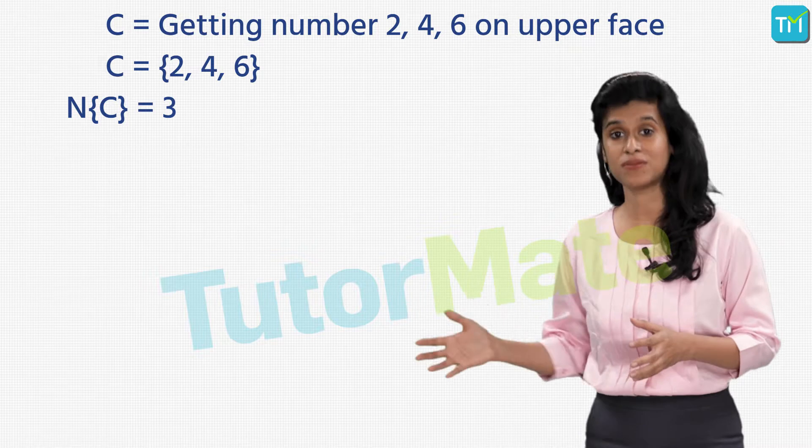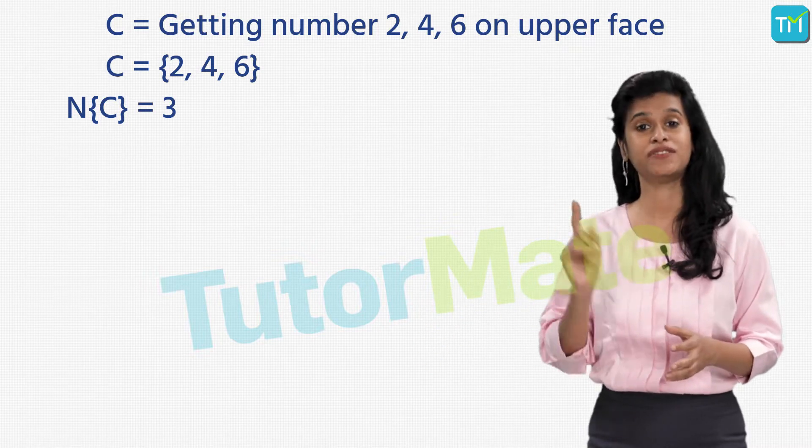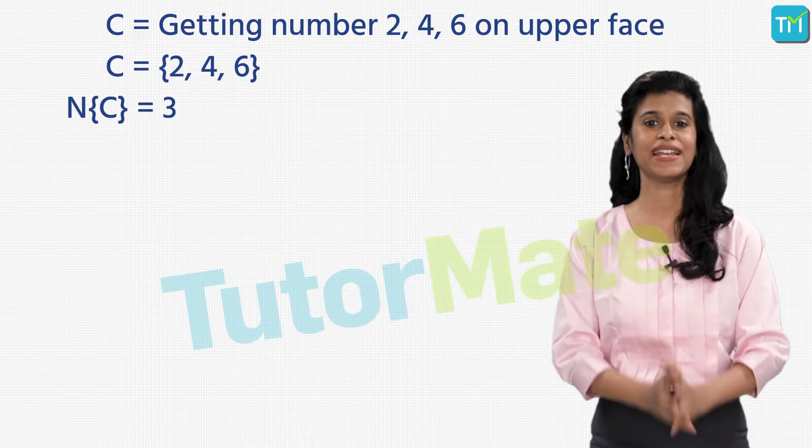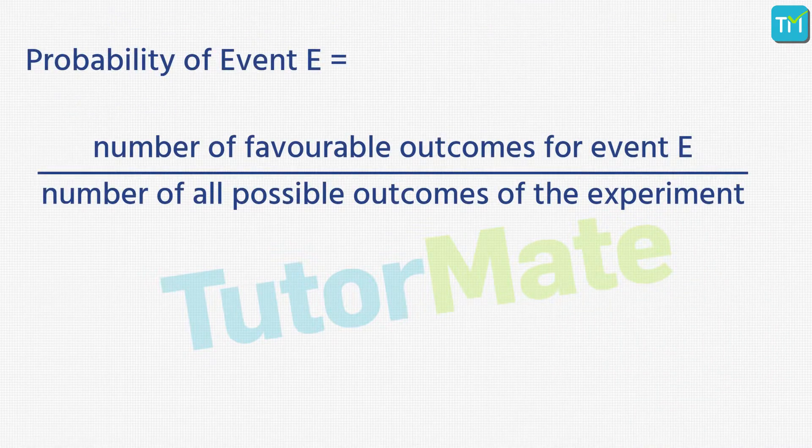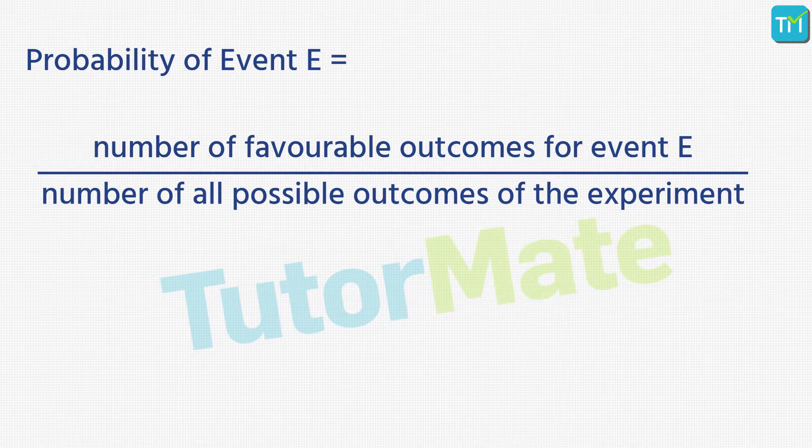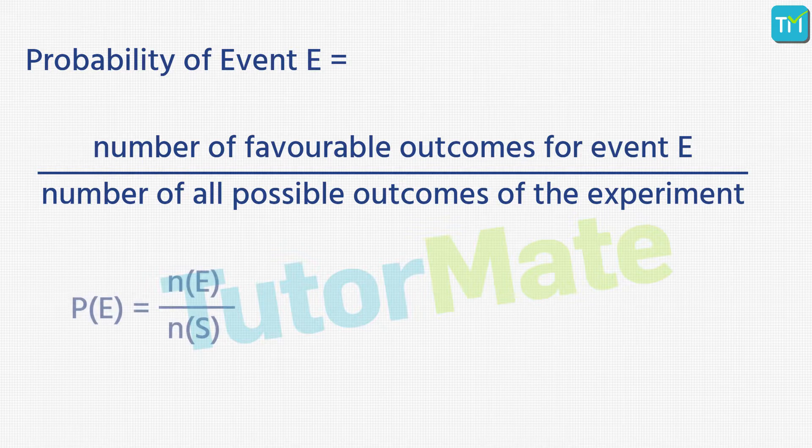And those were all the terms that you needed to learn to define probability, which means we can now mathematically define probability. We define probability of an event E is equal to the number of favorable outcomes for the event, that is E, divided by the number of all possible outcomes of the experiment. Now we denote the probability of any event, which is in this case E, as P of that event, that is P(E). So we say P(E) = n(E) / n(S).